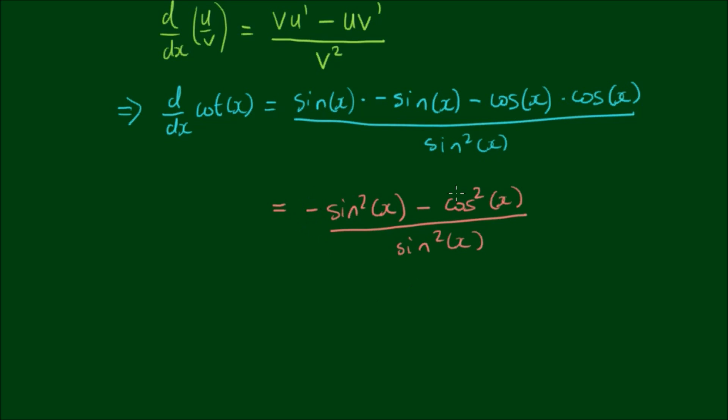And now we have a negative that's common between the sine squared of x and the cosine squared of x. So we can take that out. We can factorize that out and turn the negative inside into a plus. And by the Pythagorean identity, the sine squared of x plus the cosine squared of x, well that's equal to 1, so we have negative 1 over sine squared of x.